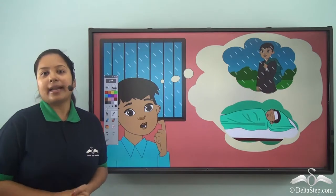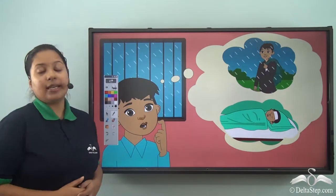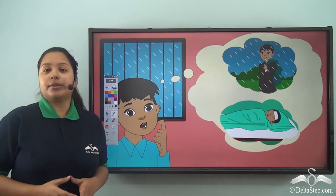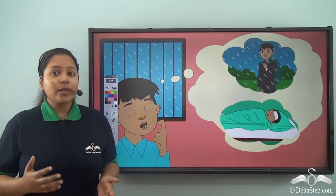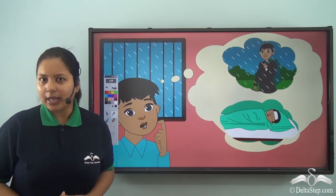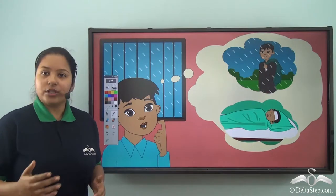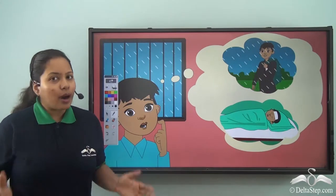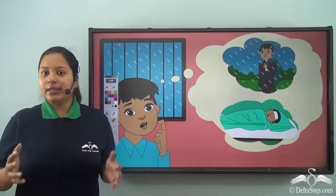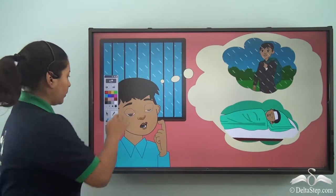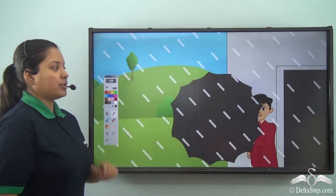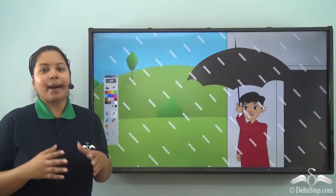Now let's look at an example. Over here we see Ravi. One day it was raining very heavily and he was supposed to go out. But suddenly he remembered that last year it was also raining very heavily, and he went out without a raincoat or an umbrella and fell sick. So this time he remembered to take an umbrella so that he would be safe. So we saw that by knowing our past we can develop our future.